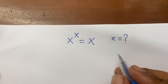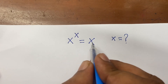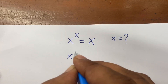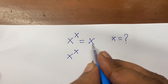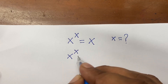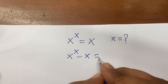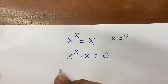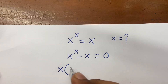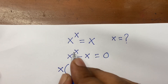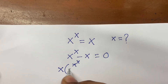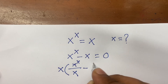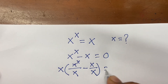So first of all, I can say here is x to the power x equal to x. So x to the power x — I move this x to the front. So I can say here is x to the power x minus x equal to 0. Now x is common, so here is x times x to the power x divided by x, minus x divided by x, equal to 0.